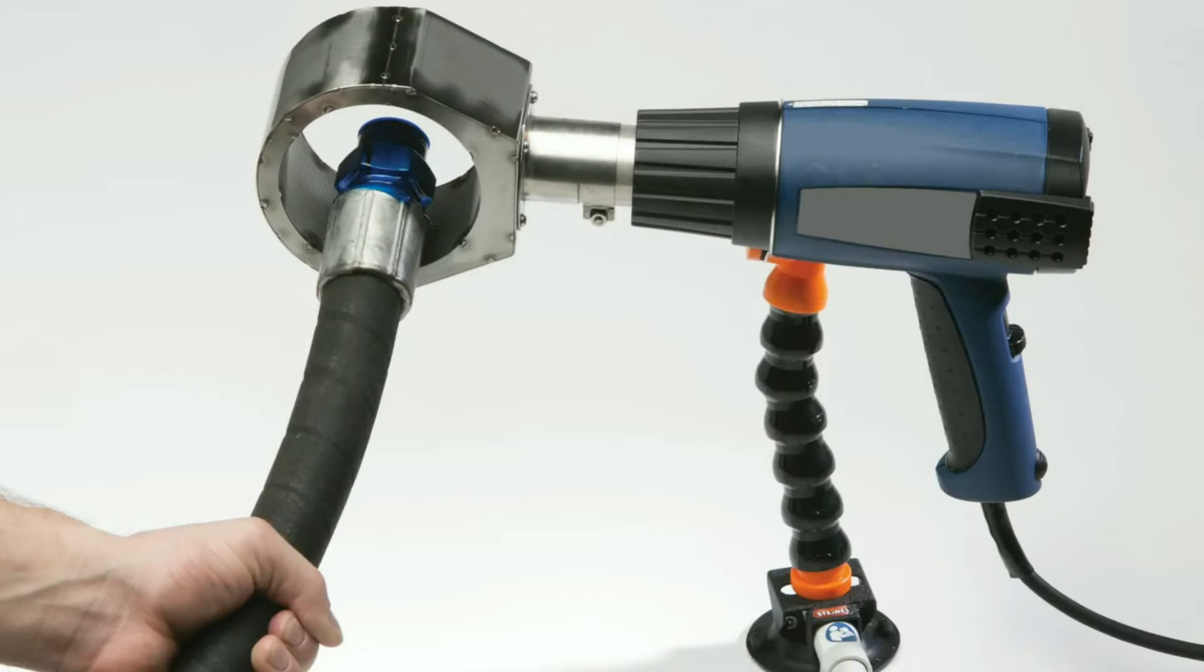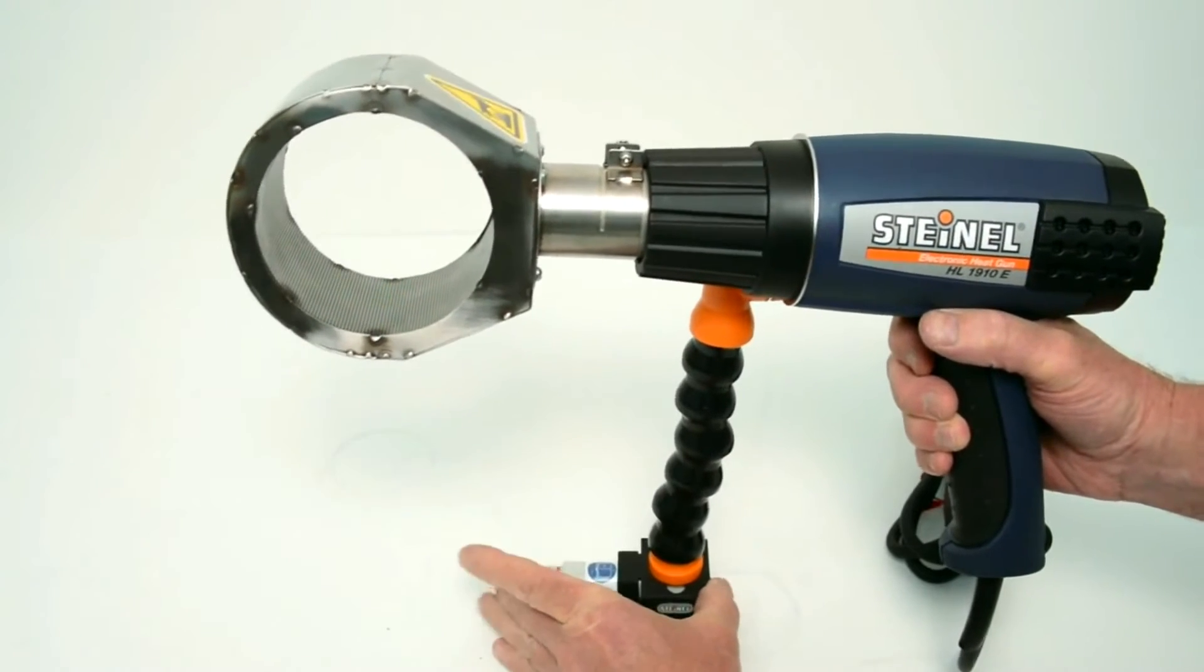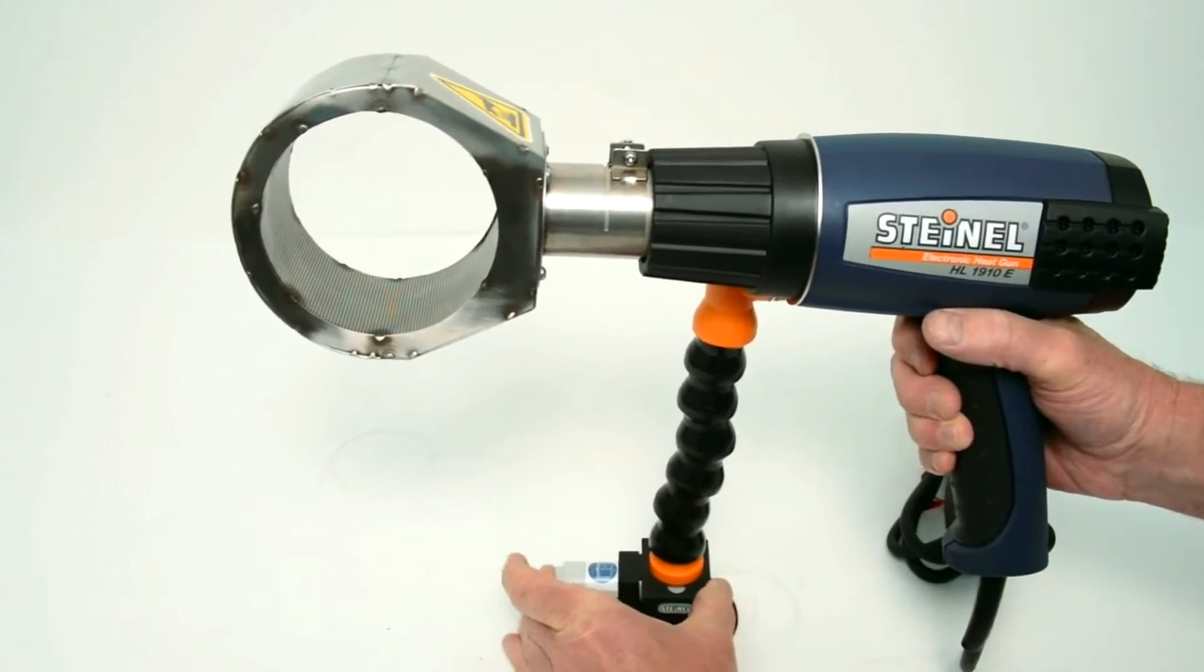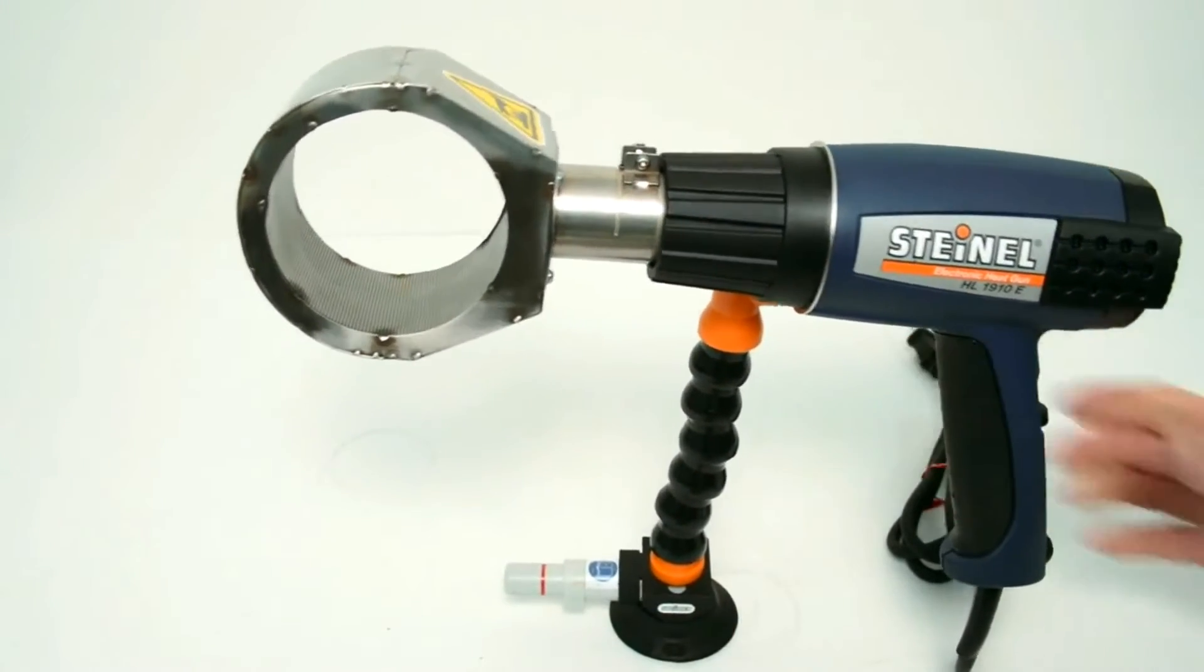UltraClean also offers an industrial heat gun with diffuser. The heat gun can be bench-mounted by using the vacuum pump adjustable stand for hands-free operation.